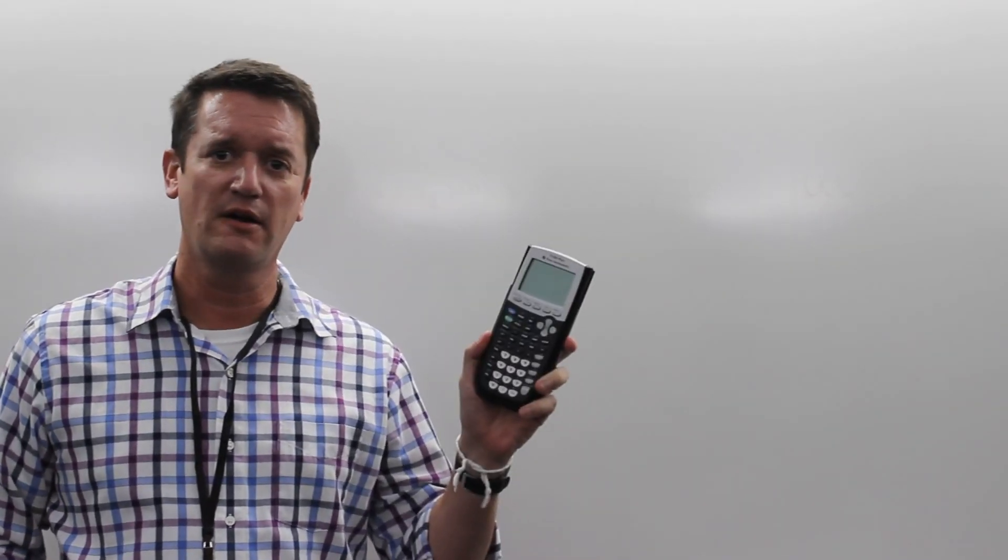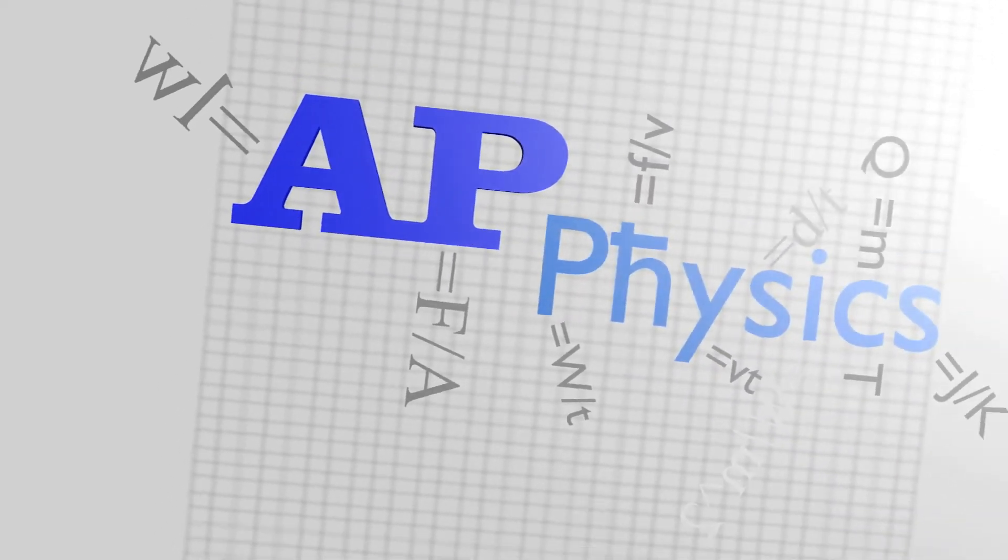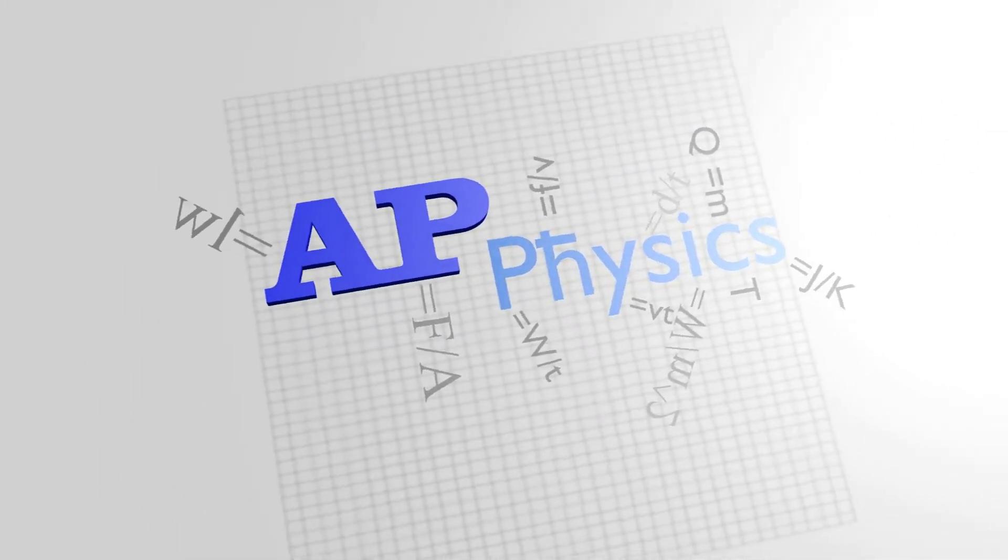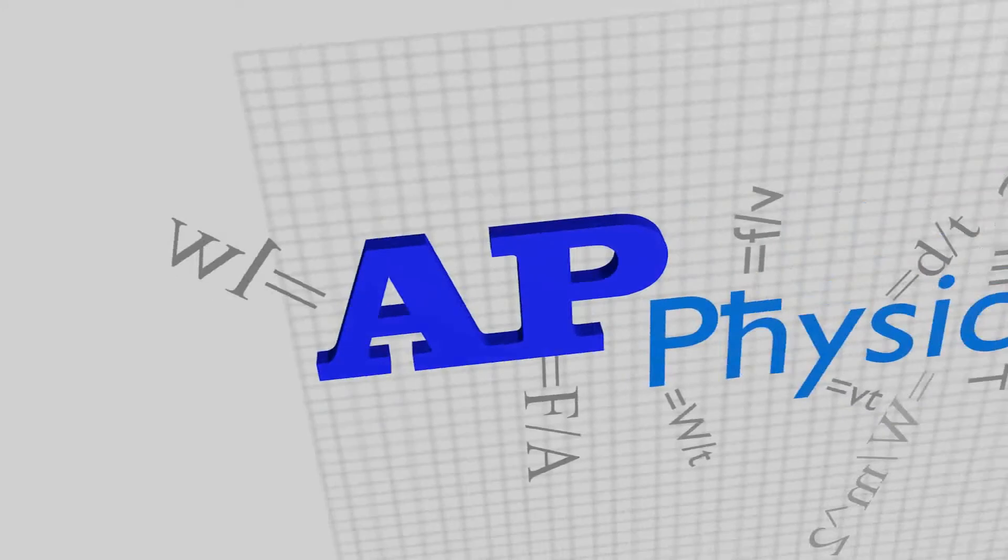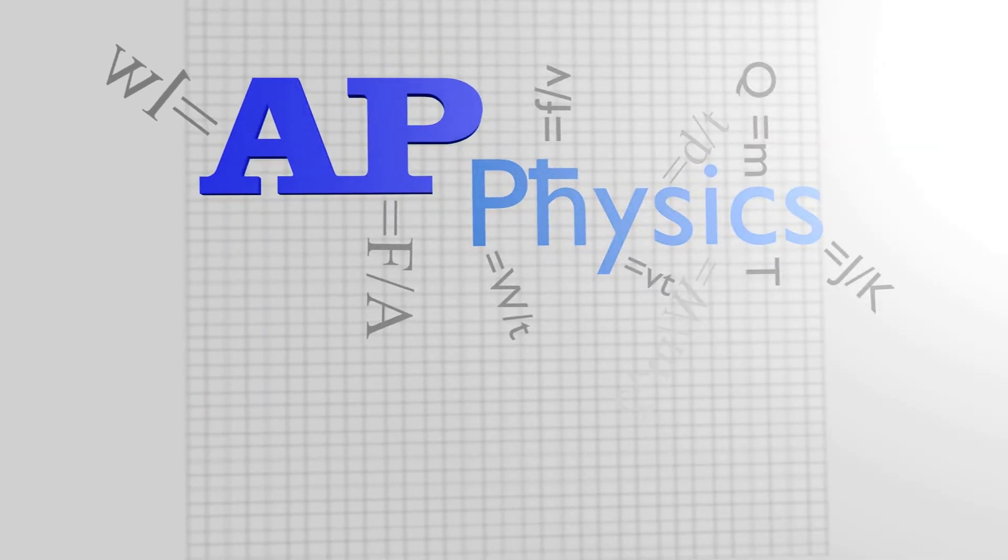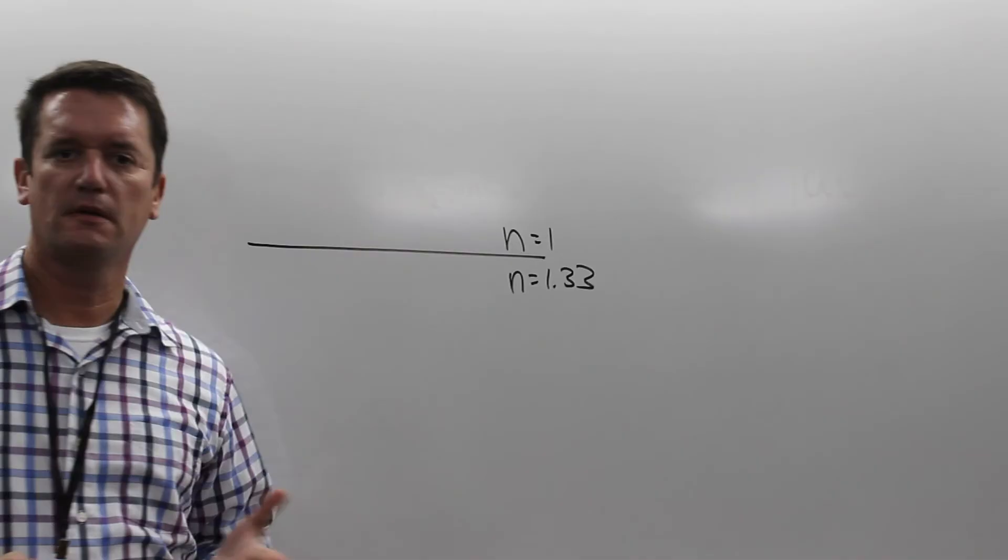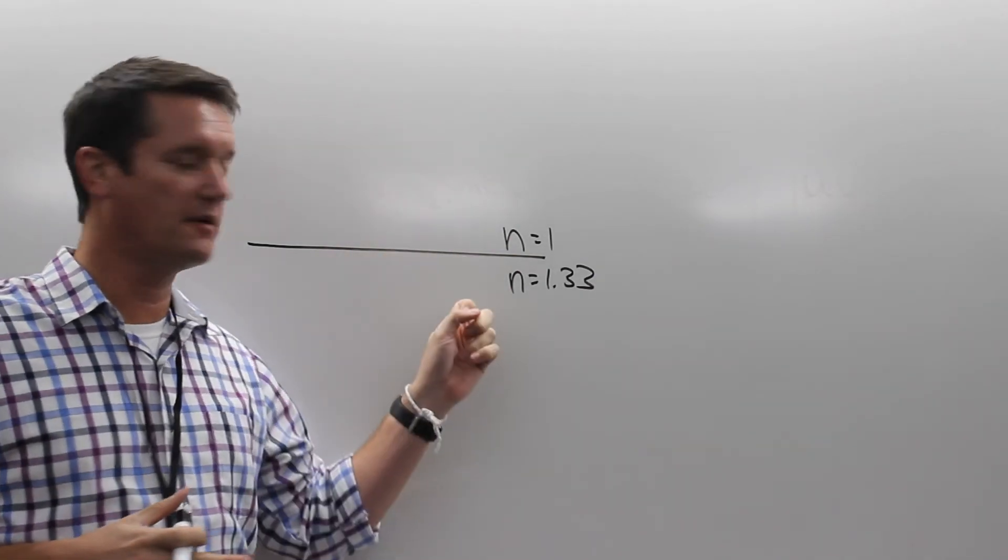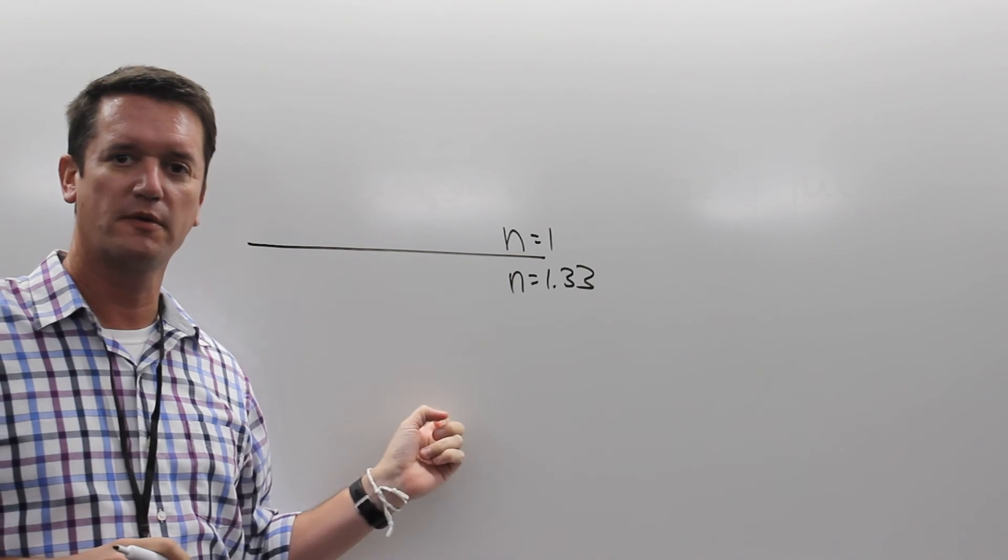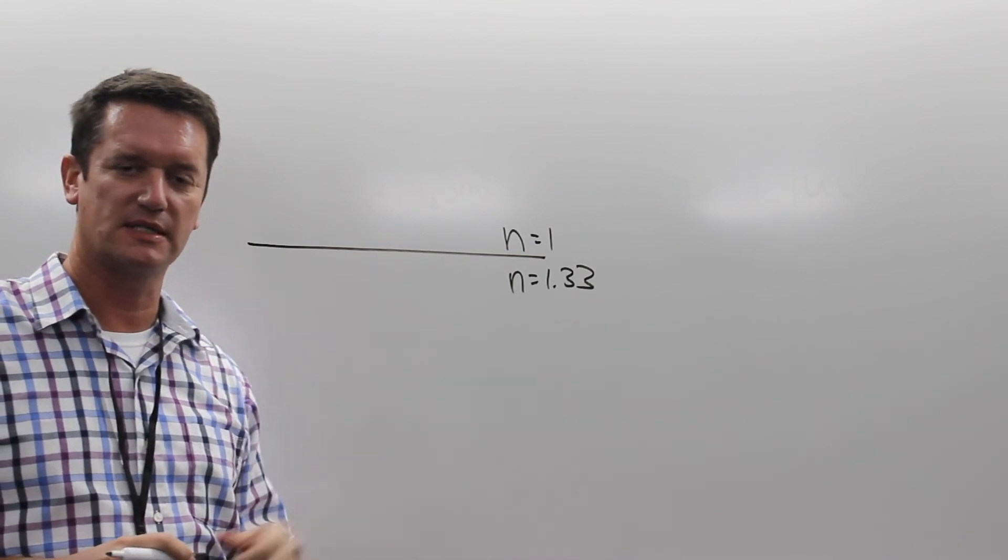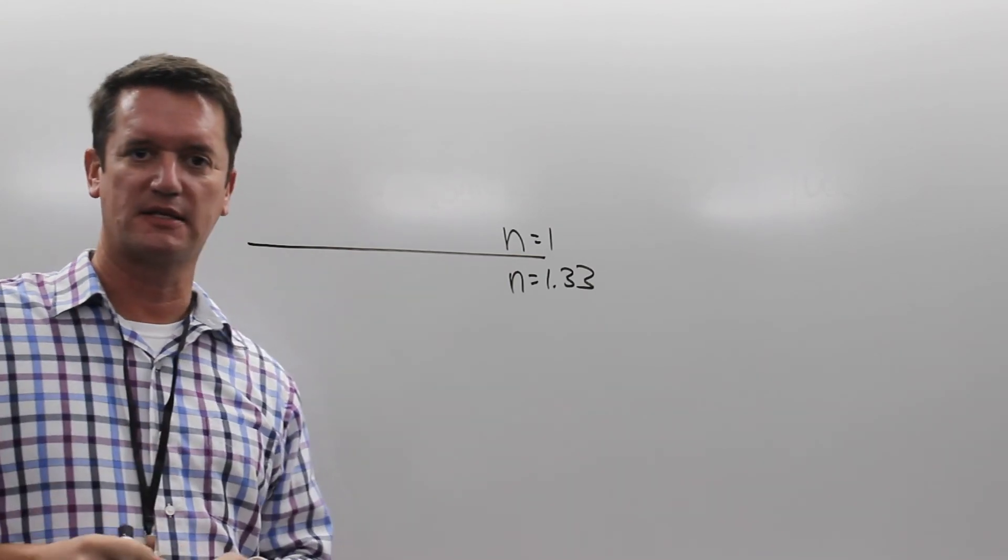I'm going to start today by doing a little bit of math. Go ahead and grab a calculator and a piece of paper and a pencil. Let's start with a situation here. We've got air and water, with air having an N of 1 and water with an N of 1.33. This is index of refraction. We learned about this yesterday.